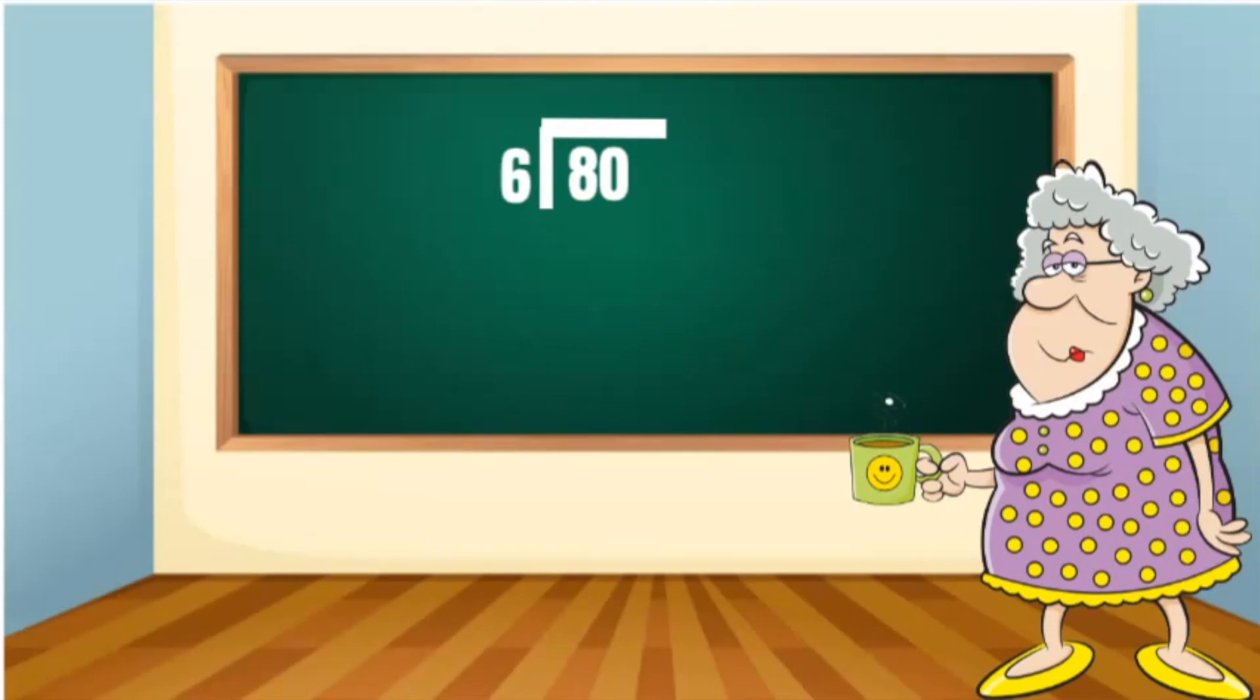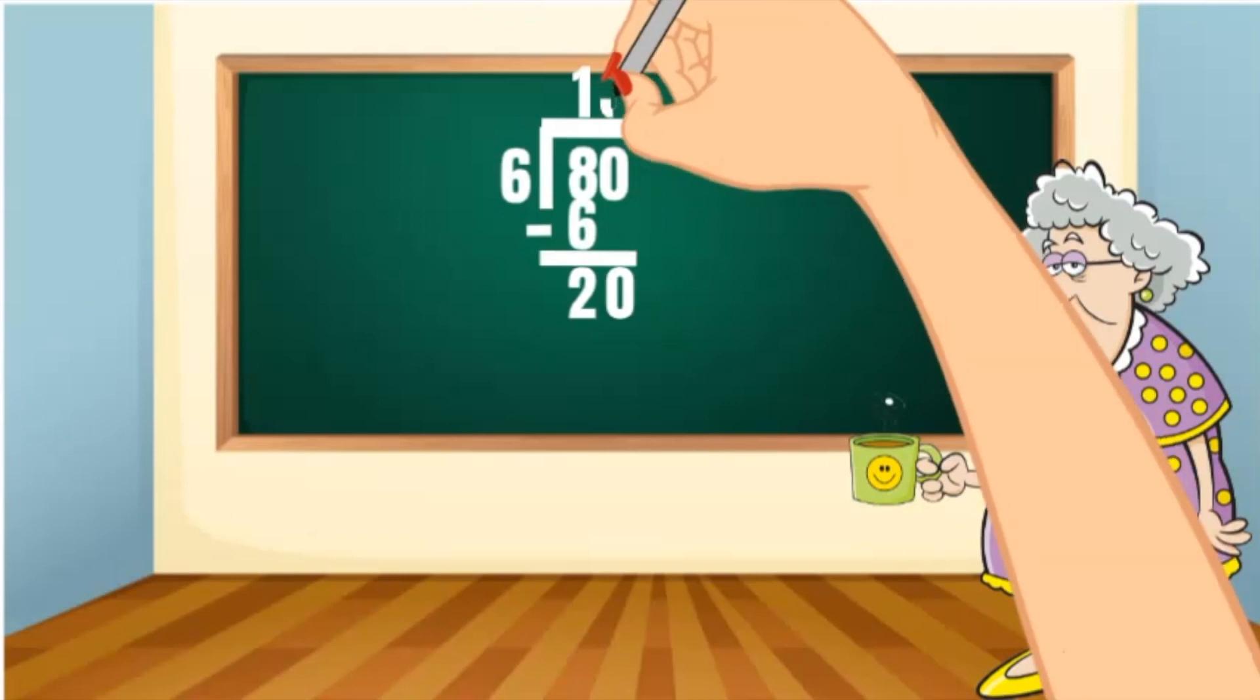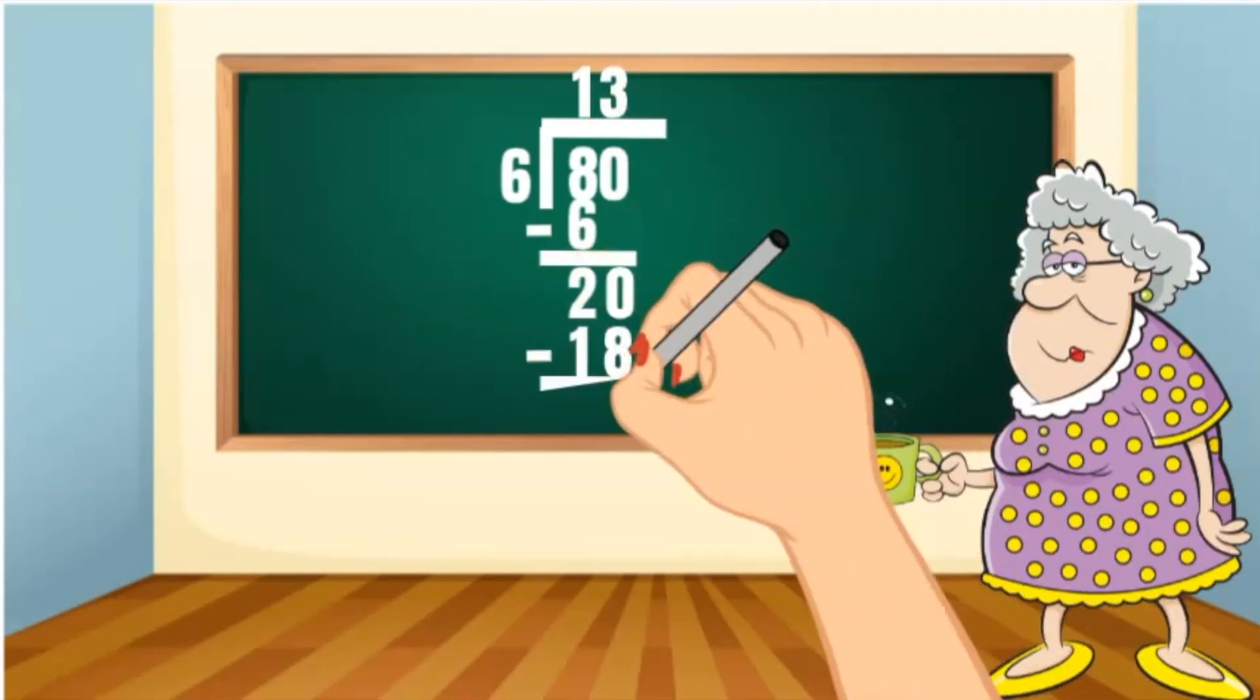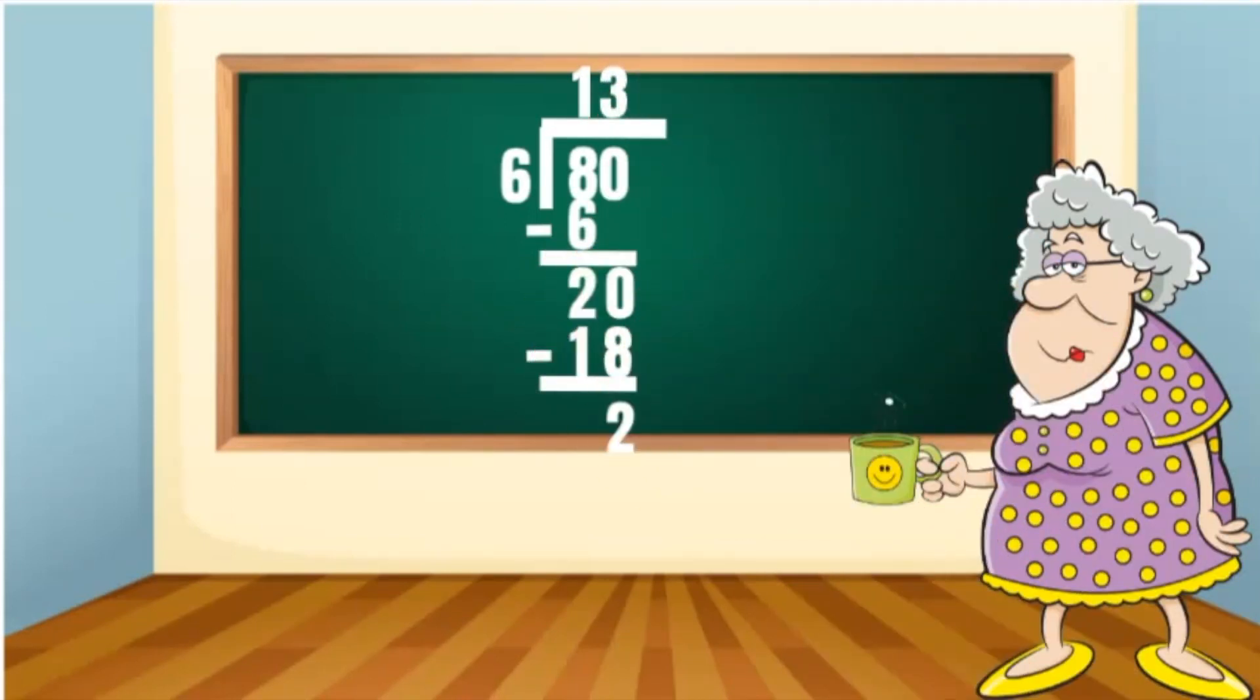Six can go into eight one time. One times six equals six. Eight minus six equals two. Bring down the zero. Six can go into twenty three times. Three times six equals 18. 20 minus 18 is two. There are no numbers left to bring down, so two is my remainder.